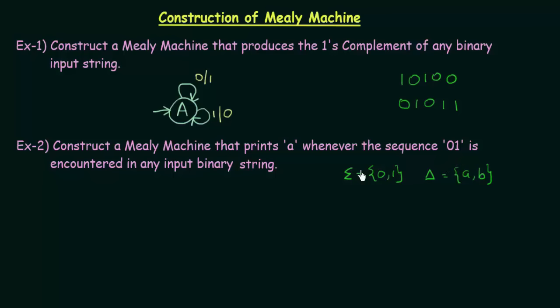Let us see how we can do this. Before we try to make the Mealy machine directly, let us do it in a simpler way by constructing a DFA for this, and then we will try to model the Mealy machine out of our DFA. Let us try to make a DFA that accepts any strings that end with 0, 1. I start with my starting state A.